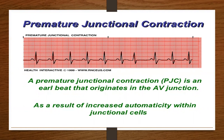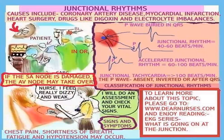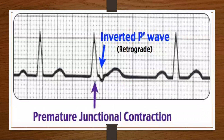Premature junctional contractions are early beats that originate in the AV junction as a result of increased automaticity within the junctional cells. Here's an example of a premature junctional contraction in which you have the inverted or retrograde P wave.